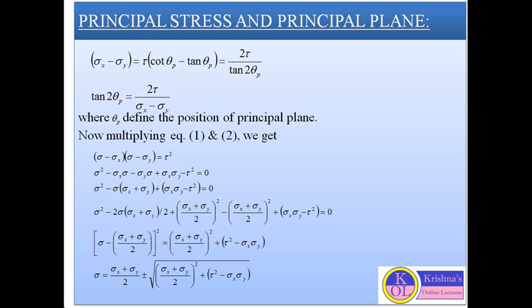Multiplying equations 1 and 2, we get: (sigma − σx)(sigma − σy) = τ². Simplifying this gives: sigma² − sigma·(σx + σy) + (σx·σy − τ²) = 0, which is the quadratic equation for the principal stress. The simplification of this equation is shown here; you can go through it.